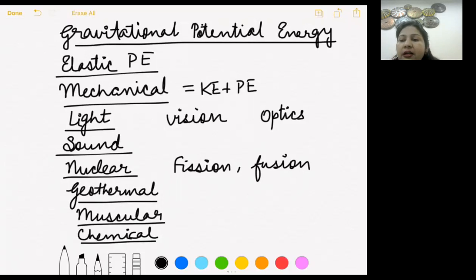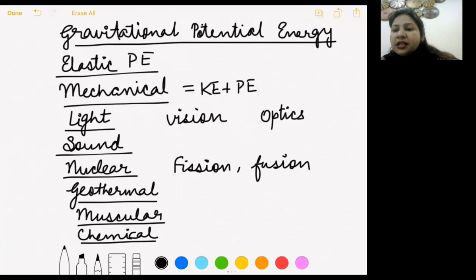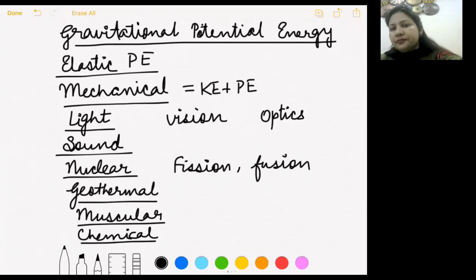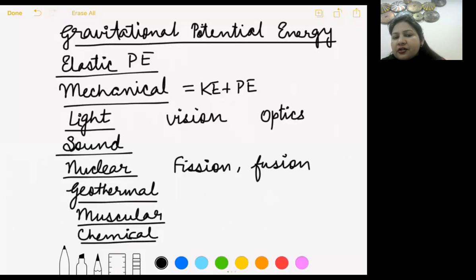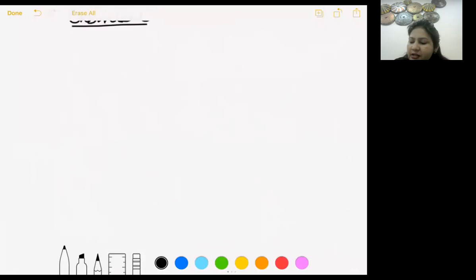Chemical energy is the energy stored in any object due to chemicals inside it. For example, coal has a lot of chemical energy. Crackers that we use during Diwali also store a lot of chemical energy. These are the main types of energy; now we will come to kinetic energy in detail and derive its expression.